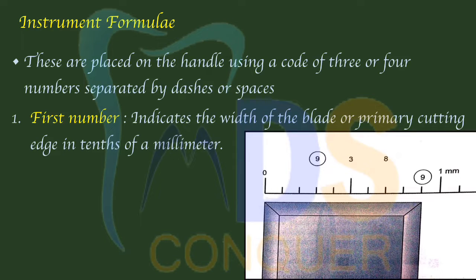Coming to the instrument formula — every instrument has a formula which is given by a series of numbers. It can be either a 3-series, which has 3 numbers, or a 4-series, which has 4 numbers.